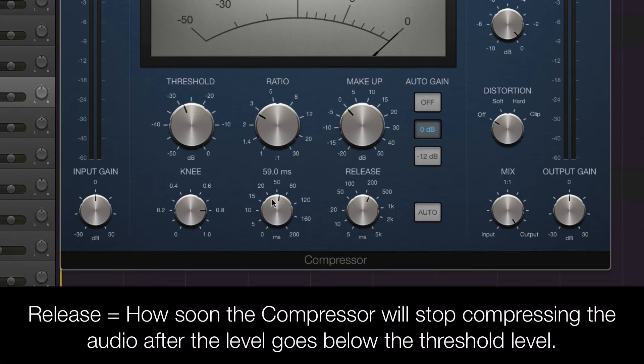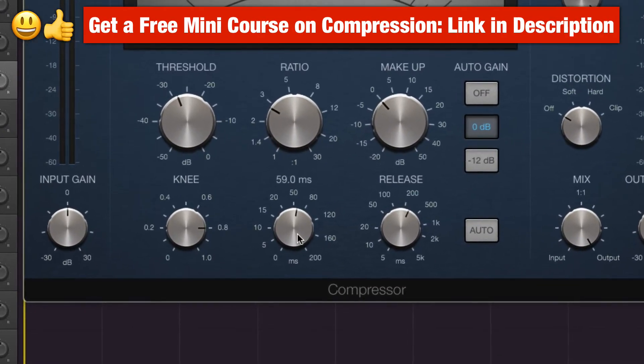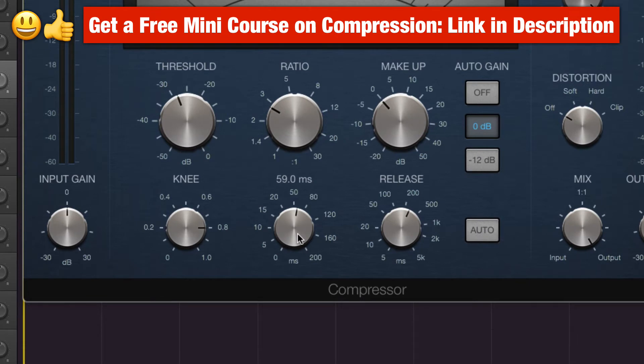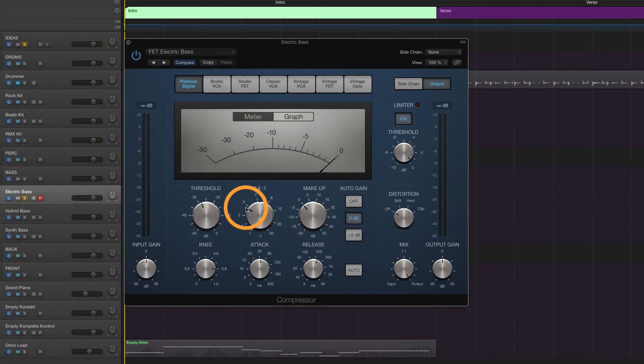So, by having the attack at, well, in this case, 59 milliseconds, the pluck on the bass guitar will not be compressed. Only the sustaining part of the sound will be compressed. Which means that you will increase the clicky-pluckiness of the sounds, and this will make the electric bass be heard in the track over all other instruments. Okay, so those were the settings, or at least the most important settings.